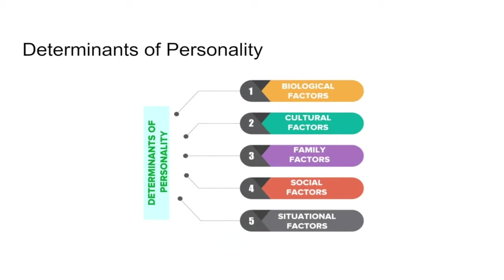What determines your personality? We've got the nature-nurture argument. The nature side includes biological factors — who are your parents, where did they come from, what is their background? Cultural factors and family factors are more nurture-based. Social factors relate to what kind of environment you're used to working in. And situational factors are the situations you find yourself in. These five things tend to be what influences why one's personality is the way it is.